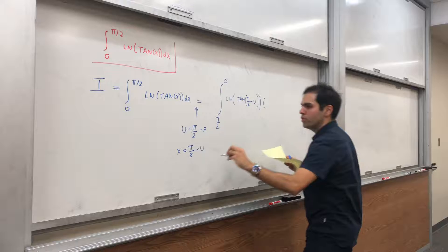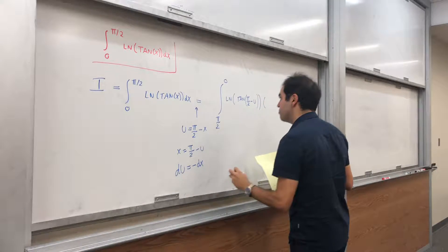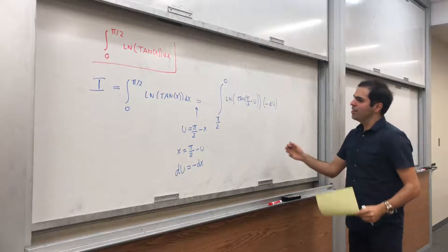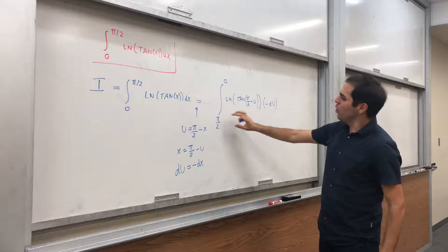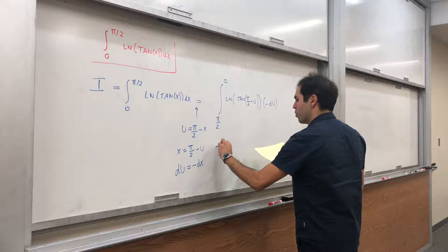And also, du is minus dx. So dx is minus du. All right, wonderful. And then, notice this is in the wrong order. But we have a minus, which puts it in the correct order.